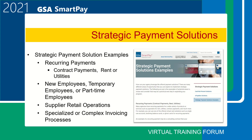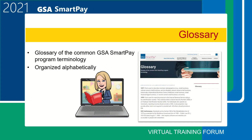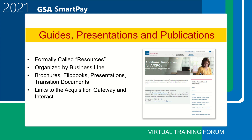The GSA SmartPay logos and card designs are available online and easily downloadable for your agency to use. Check out the GSA SmartPay virtual t-shirts. The glossary located on the website defines common GSA SmartPay program terminology and acronyms — a great resource if you are new to the program. We have moved the resource section from the main menu and listed it under either program coordinator, account holder and approving officials, or businesses and vendors.